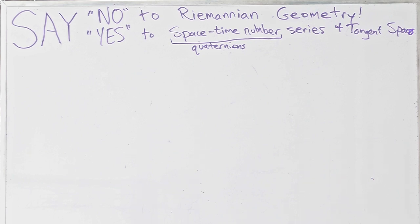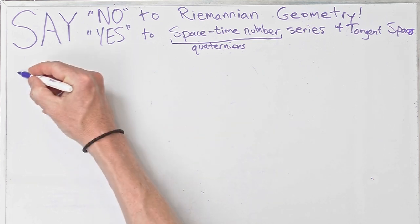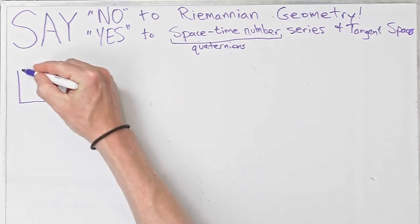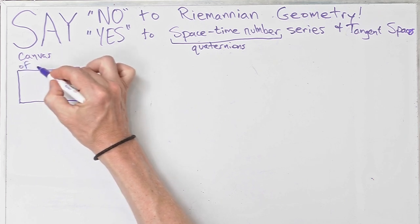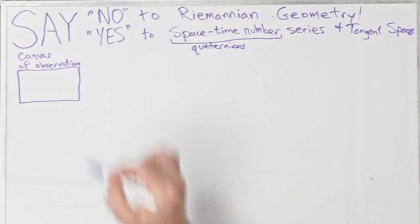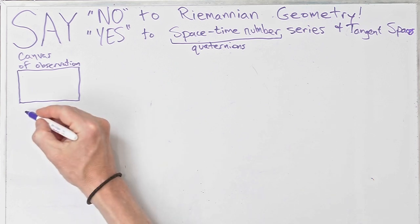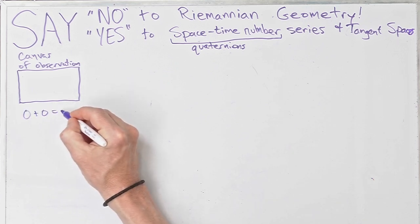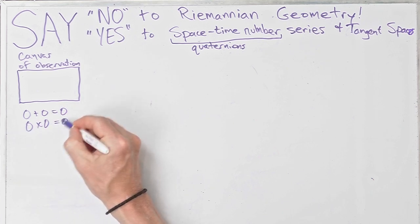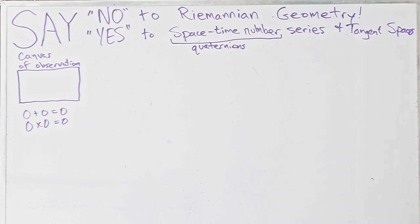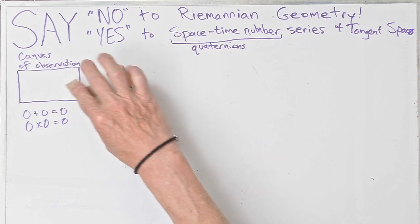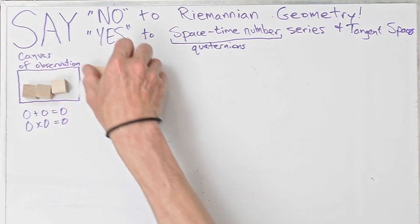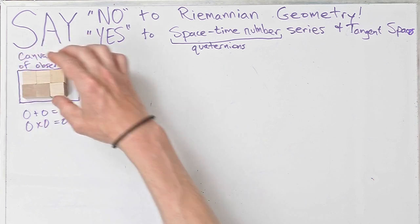How am I going to challenge the standard approach to doing physics? I'm going to start with a blank canvas — the canvas of observation. As you can see, there's nothing there. But we can do some math: 0 plus 0 equals 0, and 0 times 0 equals 0. Now let's get things to count. I started with blocks, so let's use them all — they're inside the canvas.